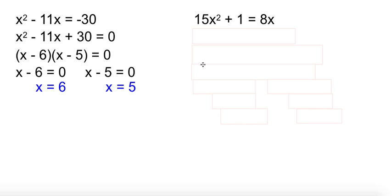Same idea applies here. This isn't equal to 0, so we need to move the 8x over. Now since we have an a value that's not 1, we have to do a little bit more work. We need factors of 15 times 1 that add to make 8.